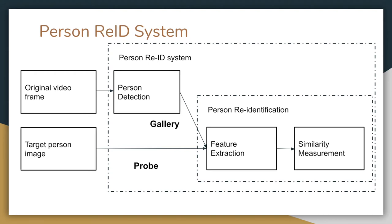In research, usually person detection and person re-ID are two separate topics. Researchers will directly use a state-of-the-art person detector or human-labeled bounding boxes. However, in a real scenario, we consider person detection and person re-ID as a whole.